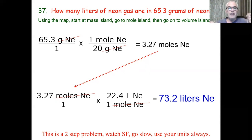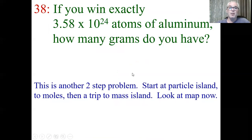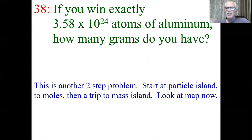Moles are central in chemistry — moles is mass, moles is volume of gases, moles is the middle of everything. If you know one thing, you can turn it into moles and then into something else. Here's a great question: 3.58 times 10 to the 24th atoms of aluminum — how many grams is that? Each atom is tiny, but we can mathematically figure out how many grams you have using mole island.